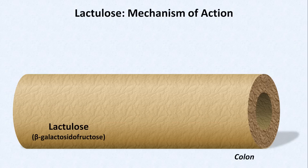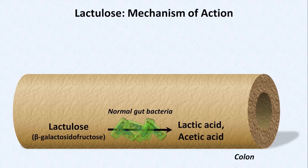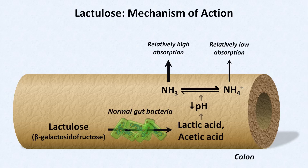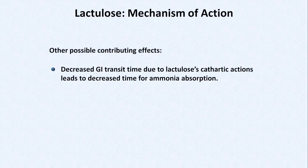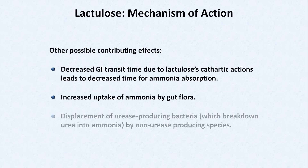Lactulose, also known as beta-galactosidofructose, is a non-absorbable carbohydrate that can be metabolized by normal gut bacteria, resulting in lactic and acetic acids being released into the gut lumen. This lowers the pH of the lumen, which then shifts the equilibrium between uncharged ammonia and charged ammonium ion. Since the absorption of the uncharged species is relatively high compared to the ionic form, this reduces the overall amount of ammonia that's absorbed. Other possible contributing effects include decreased GI transit time due to lactulose's cathartic actions, which decreases time for ammonia absorption, increased uptake of ammonia by gut flora, and displacement of urease-producing bacteria by non-urease-producing species.